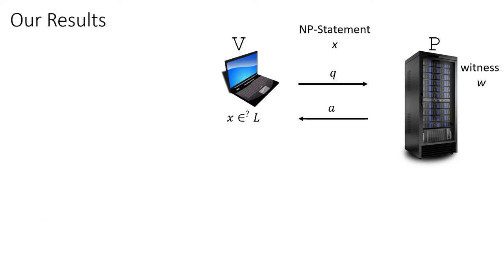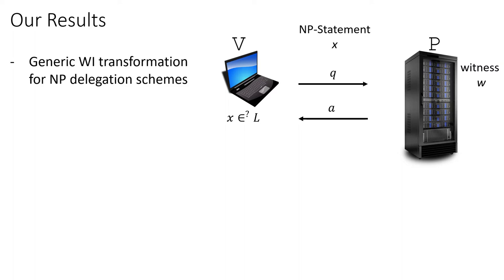Our main result is a generic transformation of every NP delegation scheme of this form into one that also has witness indistinguishability, adding privacy for the prover on top of an existing delegation scheme. The cost is an additive increase in communication complexity and verifier complexity compared to the original scheme. This additive factor is a polynomial in the computational complexity of the original verifier. If we start from a very good delegation scheme where the verifier complexity is much smaller than the length of the witness, this property is maintained even after the transformation.